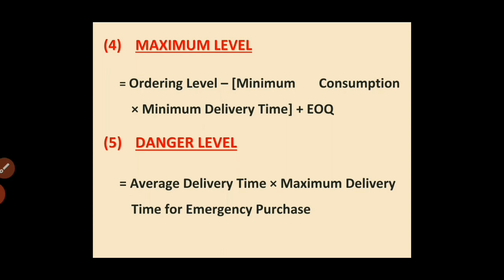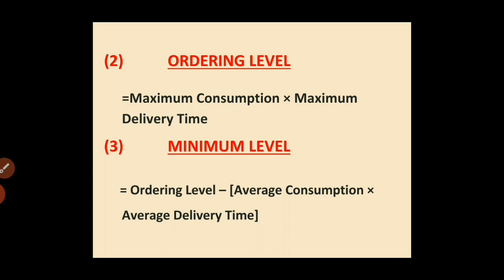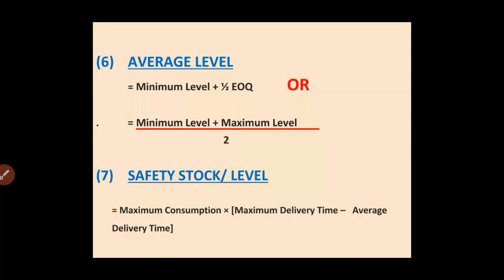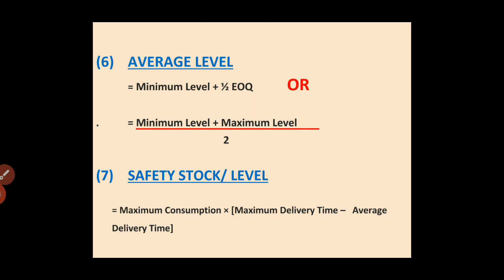To find out the maximum level, you must have the ordering level and EOQ. Formula number five: Danger Level equals to average delivery time multiplied by maximum delivery time for emergency purchase. In the second formula of ordering level, maximum delivery time is given — do not use the same time for danger level.